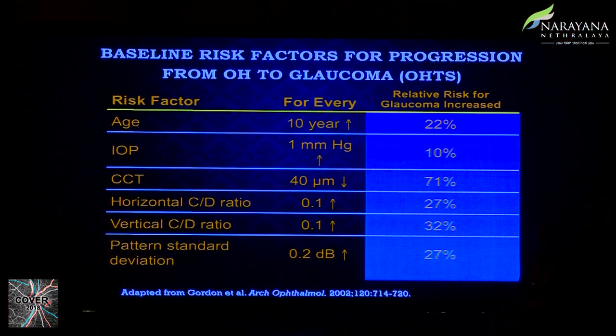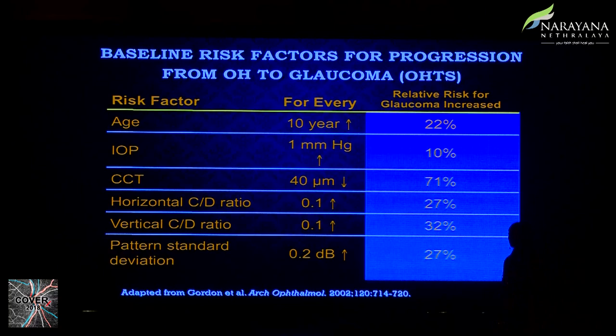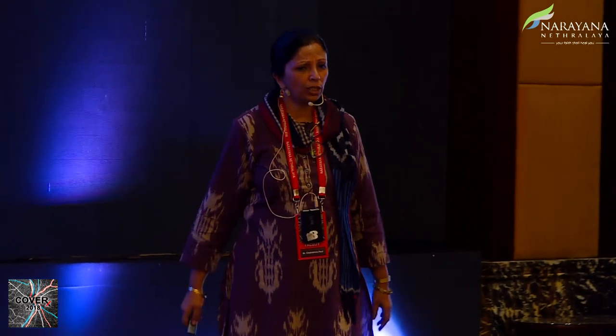The baseline risk factors for prognosis are: age — every 10 years carries a 22% risk; IOP — every 1 mmHg carries a 10% risk; CCT — 40 microns thinner gives a 71% risk; horizontal CDR of 0.1 gives 27%; vertical CDR of 0.1 gives 32%; and pattern standard deviation gives a 27% risk for every rise of 0.2 dB on visual field.